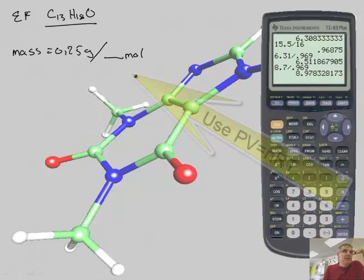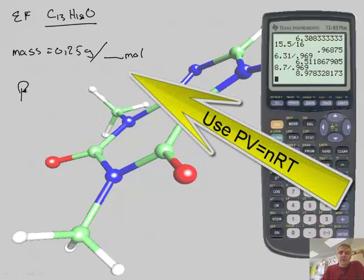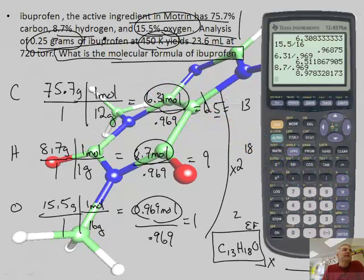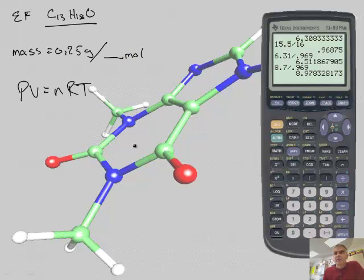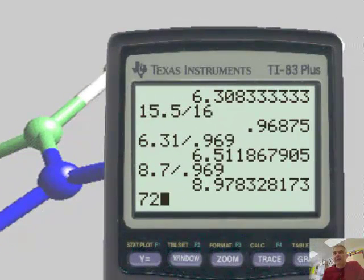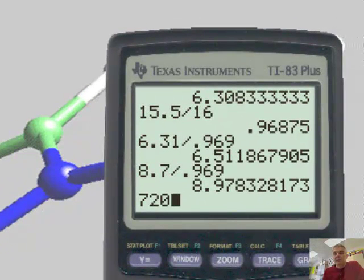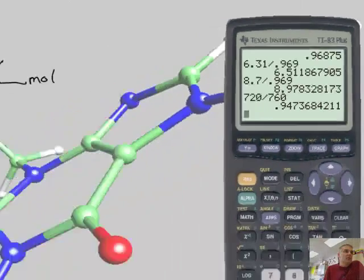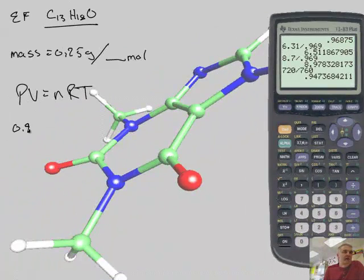I'm going to use PV equals nRT. My pressure, if you recall from the problem, is 720 torr. I'm going to check if it was collected over water. It doesn't say it was, so 720 divided by 760 gives me 0.947.